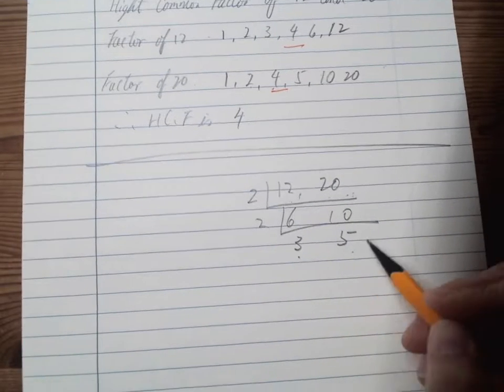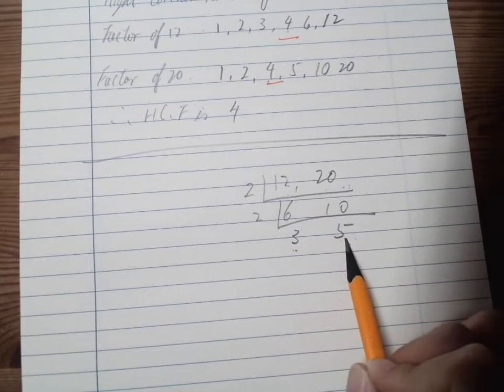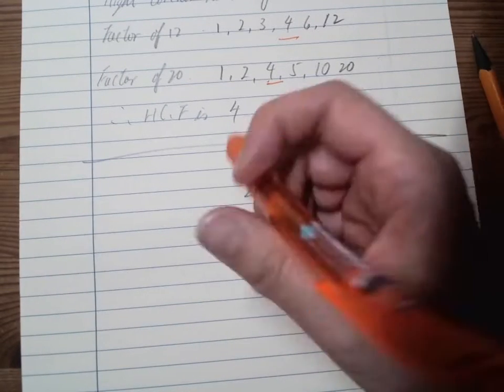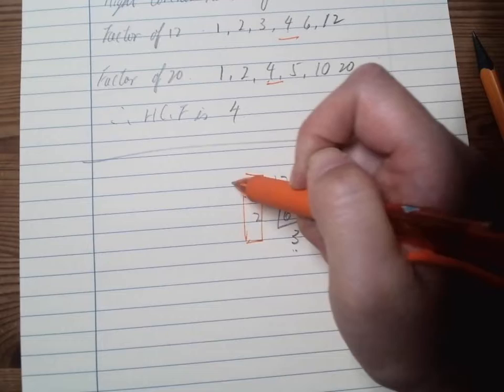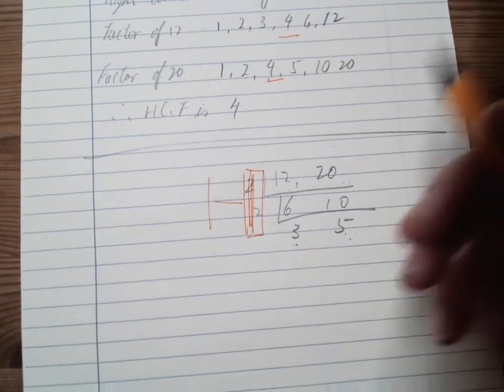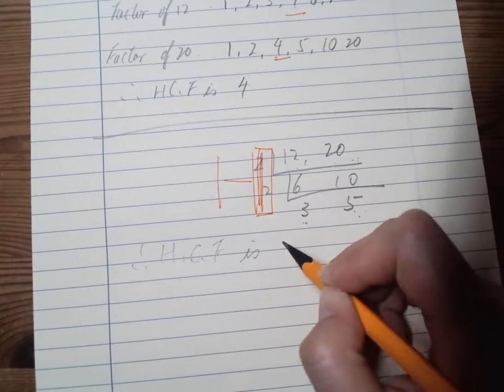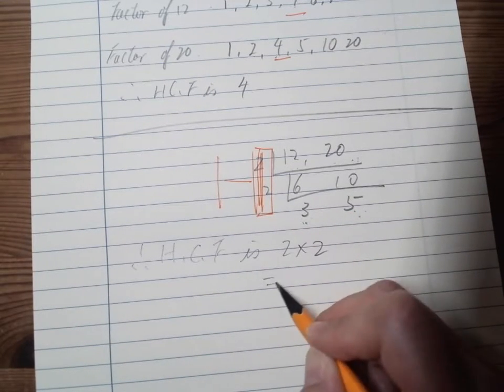Now there's no number which is divisible by both of them. So the HCF will be this side, so you imagine there's an H here. So 2 and 2, therefore HCF is 2 times 2, which is 4 here.